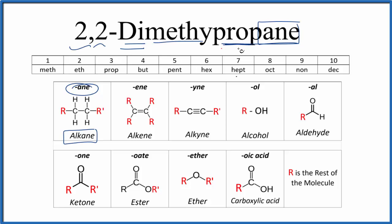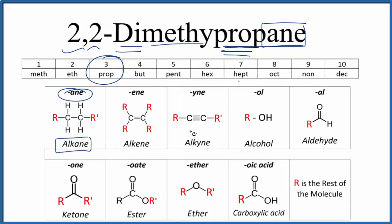Prop means three. Right here is the prefix prop. That tells us we have three carbons. They're all going to be single bonded, surrounded by hydrogens. So let's put three carbons in a row and number them one through three.